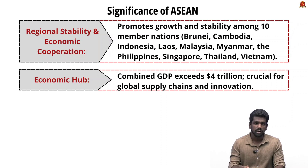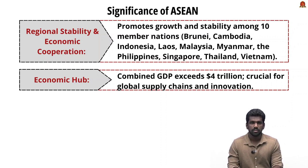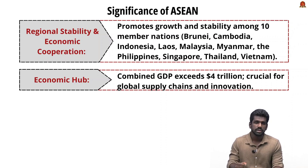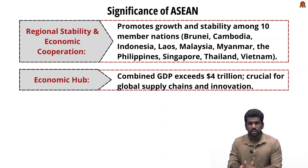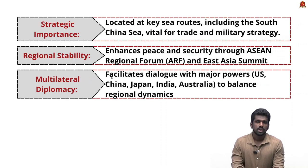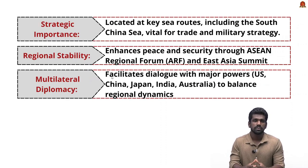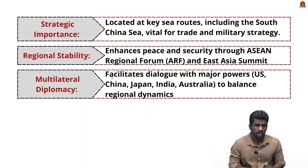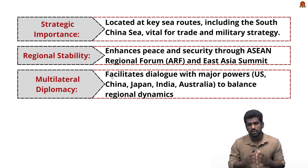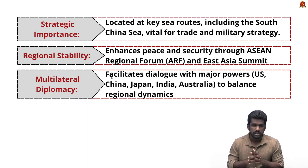ASEAN fosters economic growth and political stability among its 10 member nations: Brunei, Cambodia, Indonesia, Laos, Malaysia, Myanmar, Philippines, Singapore, Thailand, and Vietnam. ASEAN's combined GDP is over 4 trillion dollars, making it one of the fastest growing economic regions globally. The region is vital for global supply chains, trade, and technological innovation. Geographically, ASEAN countries are located at the crossroads of major sea routes including the South China Sea, which is a critical maritime passage for global trade and military strategy.